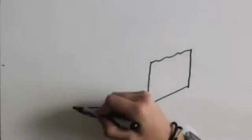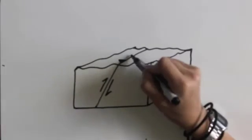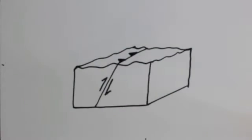Reverse faults are indicated just like normal faults in cross section, but in map view, they're indicated by triangles on the upper block.